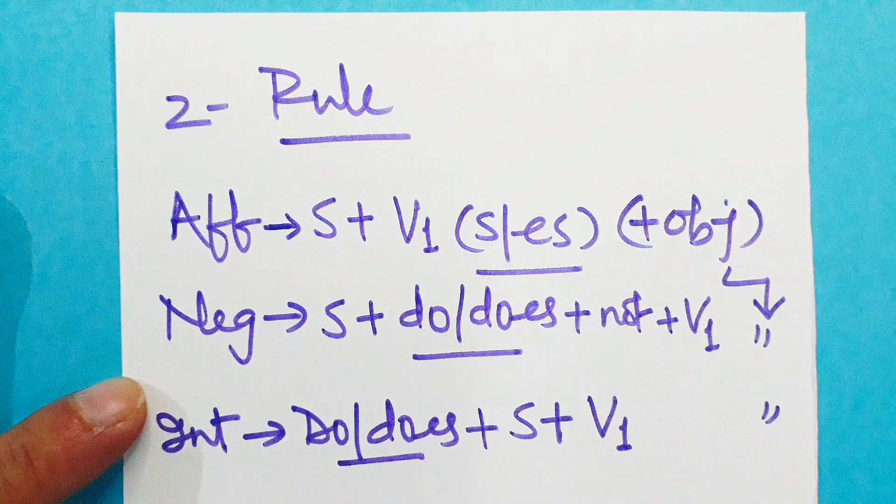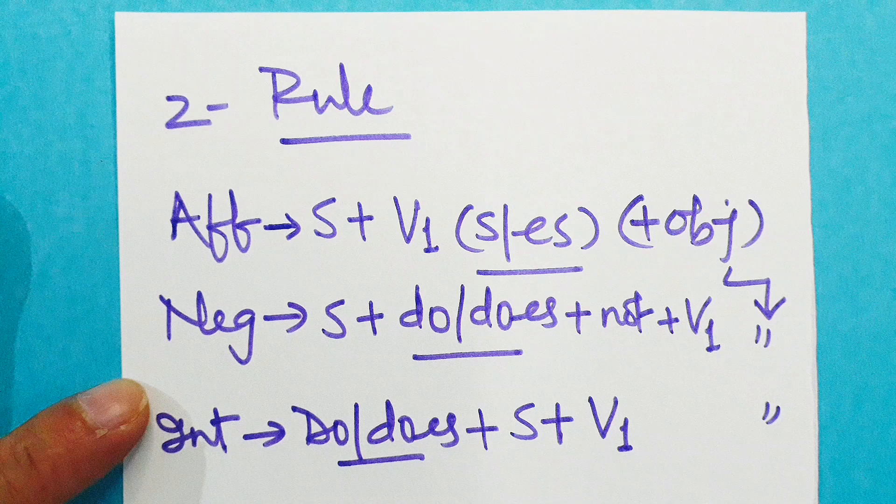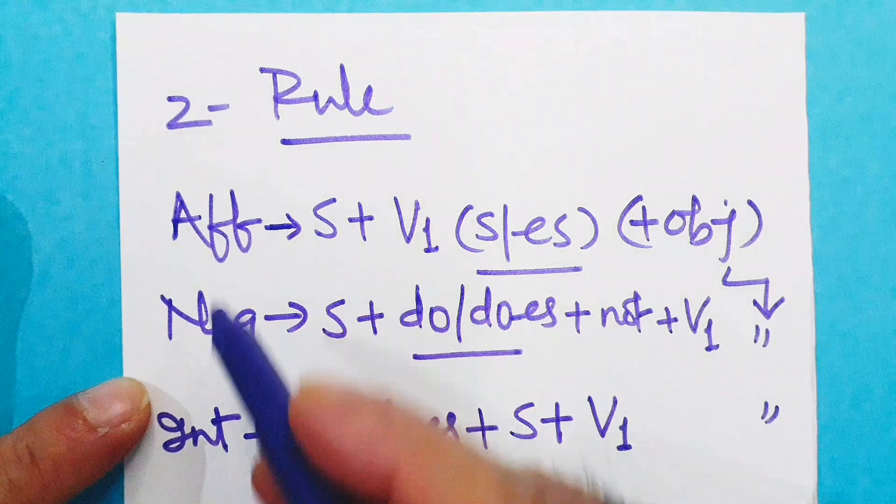Step two: rule. What are the rules to construct sentences according to this tense? The rules can be understood through these four types of sentences.